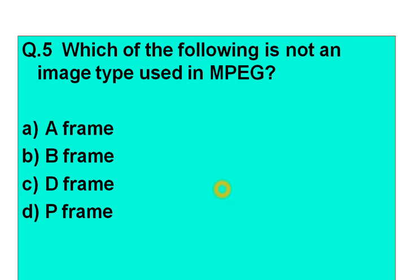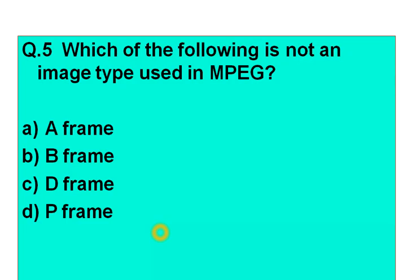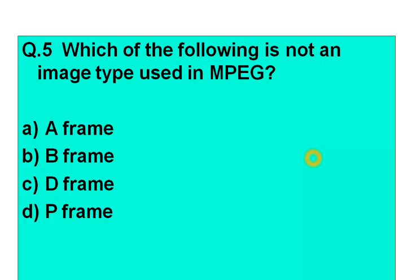The answer is option A. In MPEG we have only I, P, D, and B frames — so A frame is not associated with MPEG. The I frame (intra-frame) can be decoded independently of any other frames. P frame stands for predicted frame. D frames are all DC pictures and are independent images. B frame stands for bi-directional frame. This question was asked in ISRO 2015, showing that image processing is important for scientist posts and PhD entrance examinations.